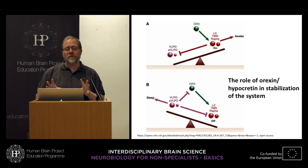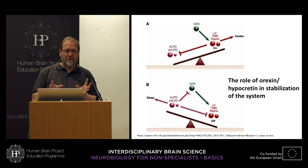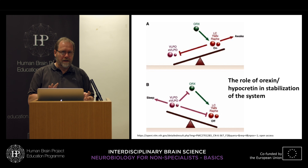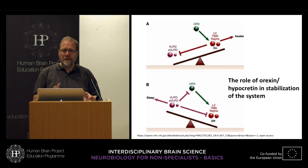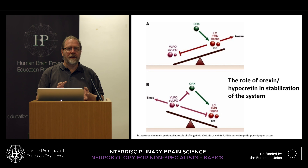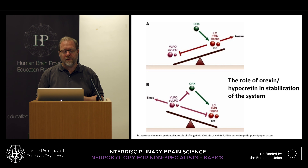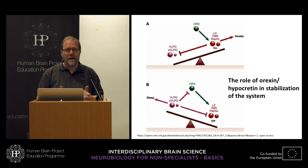With these two examples I hope to have given you a little idea of how neuronal networks are made, how the brain interacts with different types of cells, and how it can be modulated. Thank you for your attention.